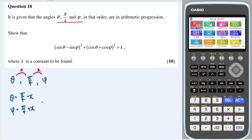And that is to first expand these out. And if I were to do that, I would get sine squared theta minus two lots of sine theta sine phi plus sine squared phi. And over here, I would get cos squared theta plus two lots of cos theta cos phi plus cos squared phi. Okay,